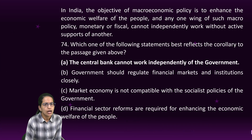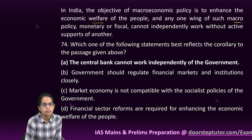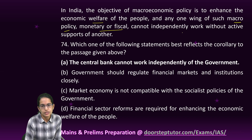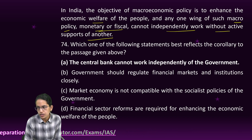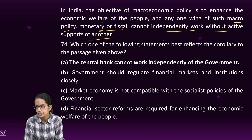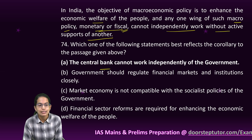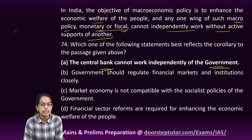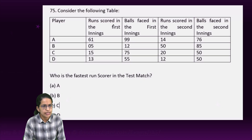The next question: the objective of macroeconomic policy is economic welfare. It includes macroeconomic, monetary, and fiscal policy, which cannot work independently without active support of one another. Monetary policy focuses on management of interest rates and money supply; fiscal policy is about taxation and government spending. So banks cannot work independent of government — they have to work hand in hand, making A the right option.